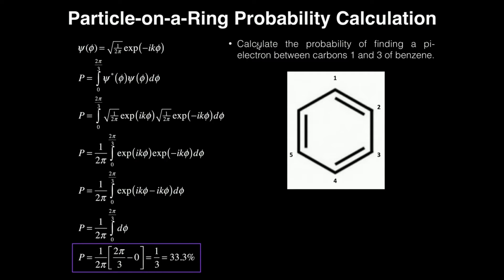So this is what the problem could say: Calculate the probability of finding a pi electron between carbons one and three of benzene, which I have right here. So here's carbon one, two, three, and so on and so forth.